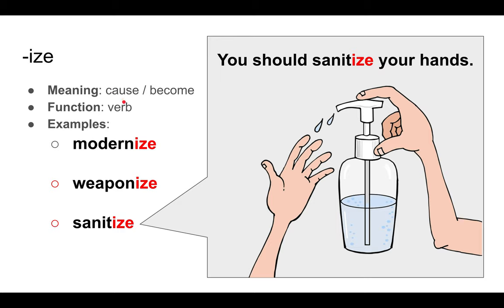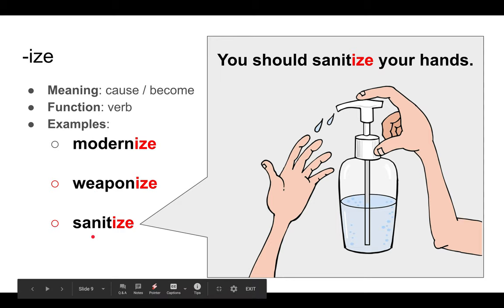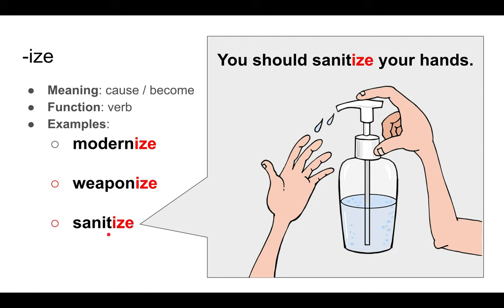Then we have -ize, and its meaning is 'cause' or 'to become.' The function is a verb. For example, modernize — to become modern. Weaponize — to provide weapons. Sanitize — to become sanitary, or become clean. For example, you should sanitize your hands. Sanitize means to become clean, so you should make your hands clean.